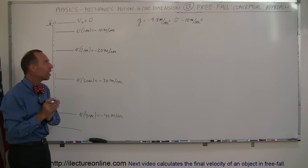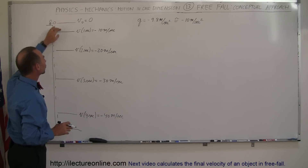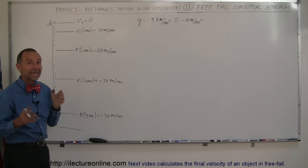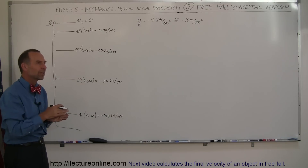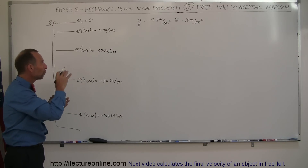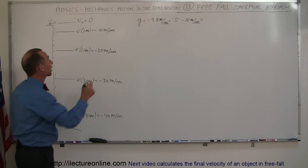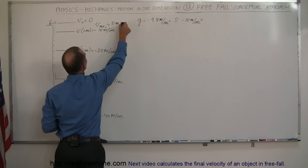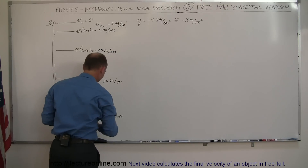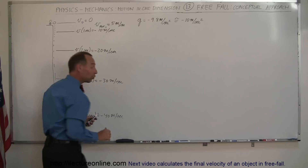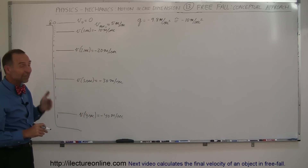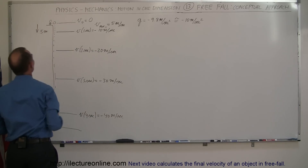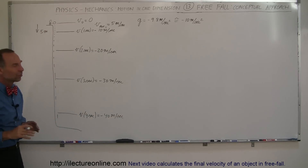What is the average velocity of the object when it drops during the first second? At the very beginning when you drop it, the velocity is 0 meters per second, and at the end of one second it is 10 meters per second. So the average for that whole first second is only 5 meters per second. Therefore, the total distance the object falls in the first second is only 5 meters. After one second, it has dropped a distance of 5 meters.